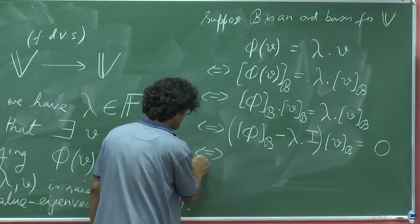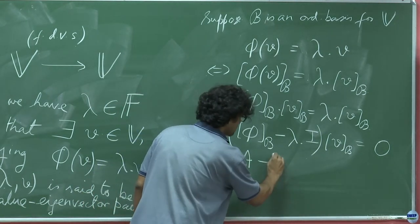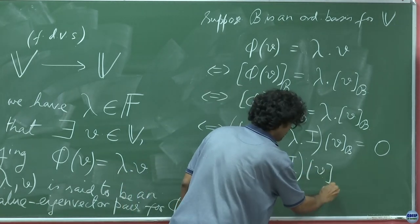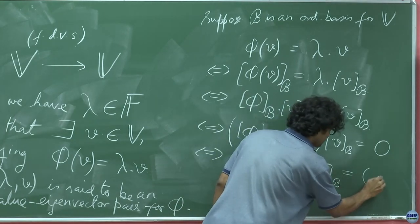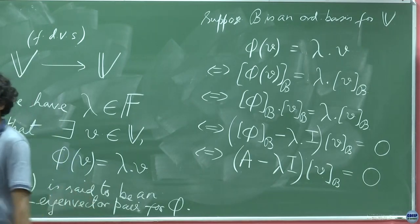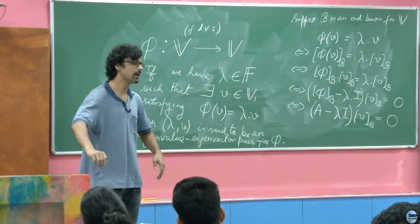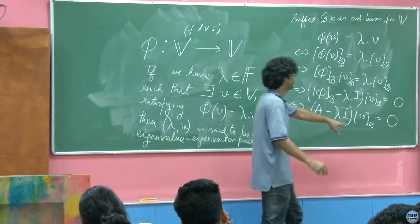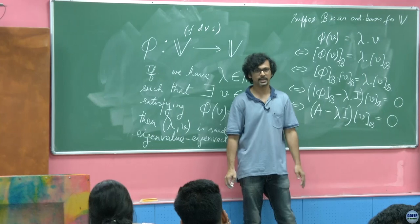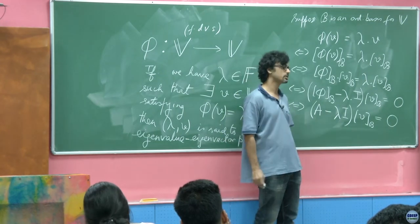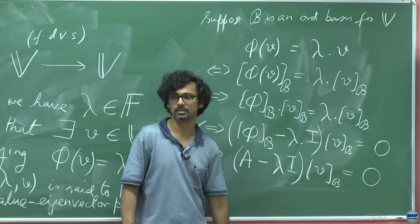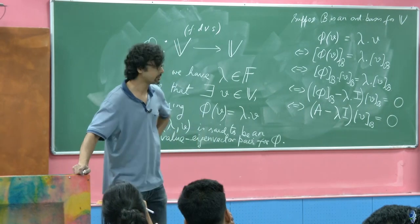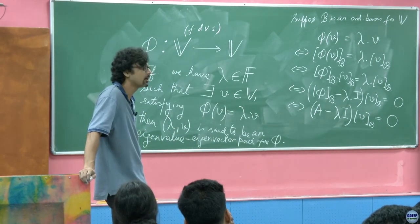So this is (A minus lambda I) acting on the coordinate vector, which is equivalent to solving for the kernel of (A minus lambda I). What are we actually trying to solve? There is one equation and we want to find both lambda and v in one shot, so we have to split this into a problem that makes sense. If you are trying to find the kernel, how would you know which lambda to search for?